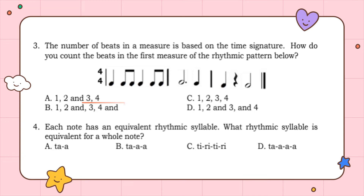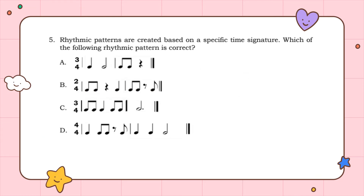If you answered letter B, you are correct. Number 4: each note has an equivalent rhythmic syllable. What rhythmic syllable is equivalent for a whole note? Is it letter A, letter B, letter C (ti-ti-ti), or letter D? The correct answer for number 4 is letter A.